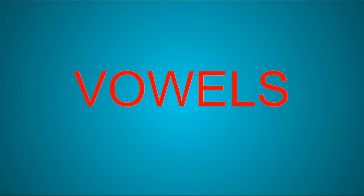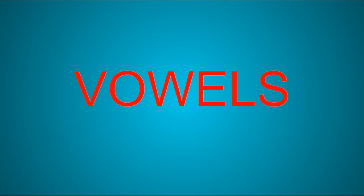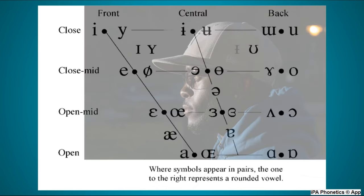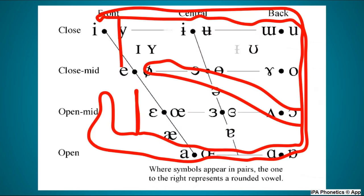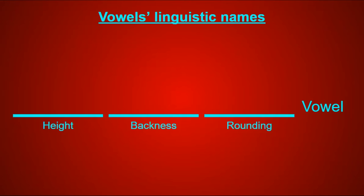Now it's time for the charts, and I'll start with the vowels since the chart is easier to understand. The chart is basically designed to look like a person's mouth when they face the left, and the various positions on the chart represent where the tongue is when making the vowel sound.